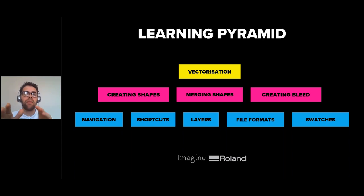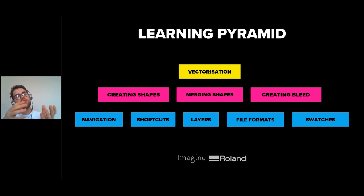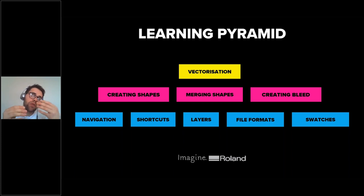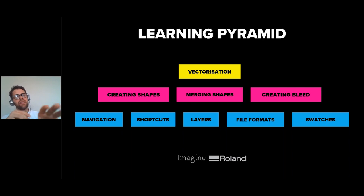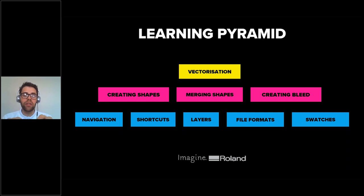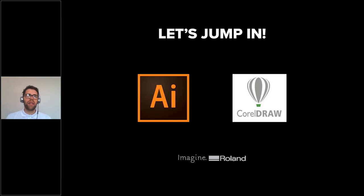The final thing we'll cover from a basic perspective is vectorization — taking a bitmap on the left and converting it to vector on the right, where the program looks at the pixels, assesses what the shapes would look like, and creates those for us. This learning pyramid is also helpful because this webinar is just a beginning point — you can go away and Google these terms in your respective software programs and build on what you've learned today. So without further ado, let's jump in — I'm going to start with Illustrator and then go into CorelDraw afterwards.